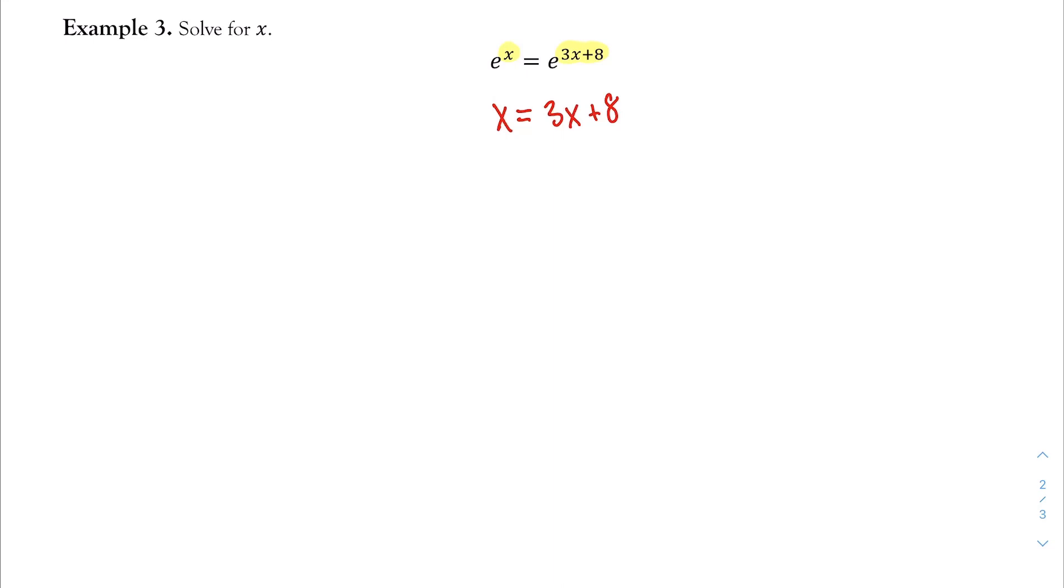So now I simply solve for x. One way that we can do this is maybe I can subtract 3x from the left and the right, giving me negative 2x is equal to 8. And then I can divide by negative 2. Again, I want x by itself. Giving me x is 8 over negative 2. I got negative 4. And once again, if I plug negative 4 into my original equation, you can calculate this through your calculator or manually, you'll see that we do get the same value.